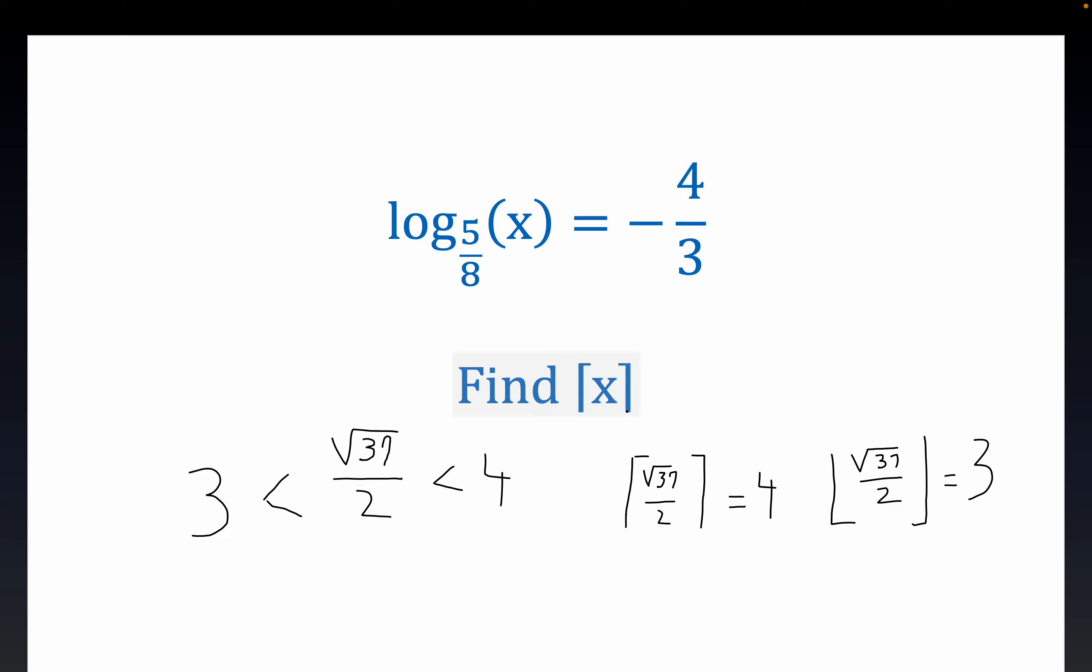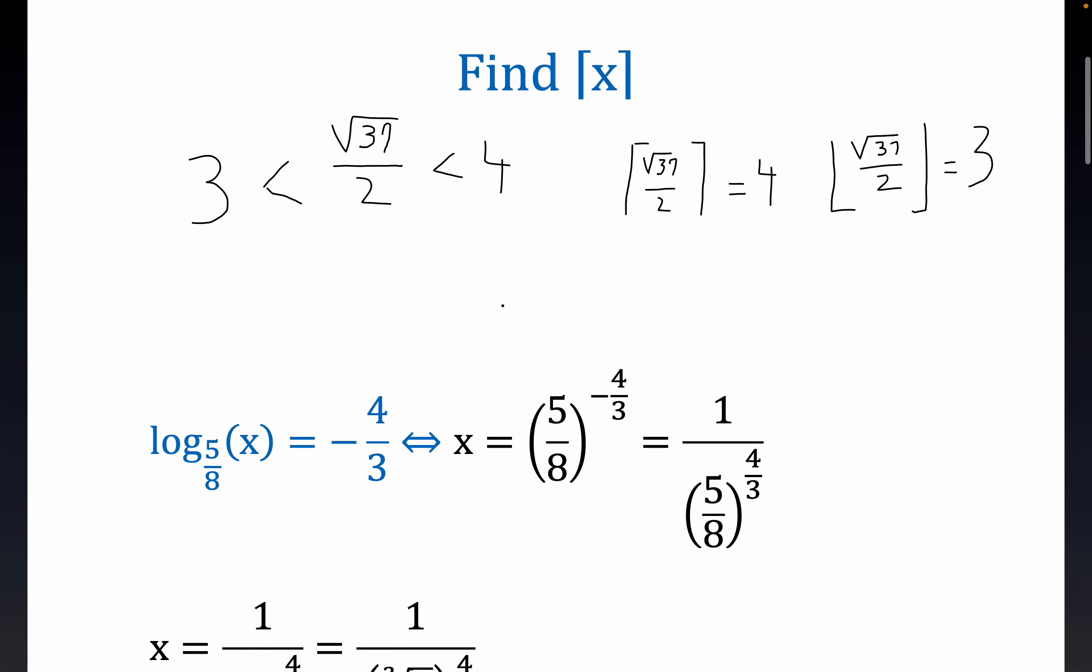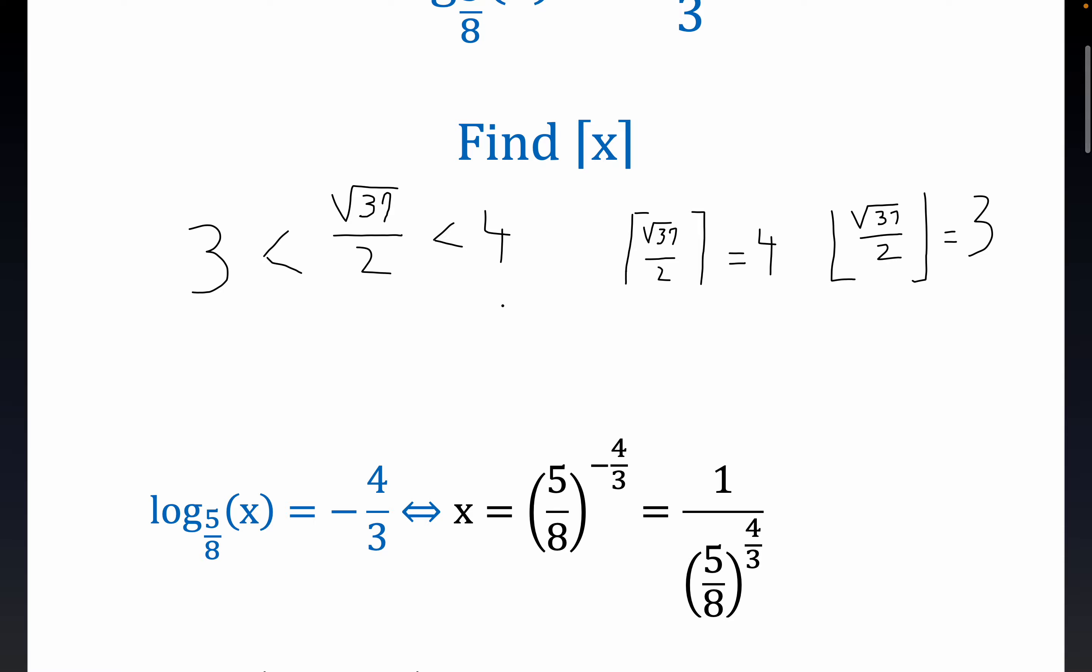So we're looking to find the ceiling of the solution to this logarithmic equation, which has an unusual base less than 1. So let's get busy on that. Now, I'm not going to review logarithms too much, but every logarithmic statement, a logarithm is an exponent, so it always has a corresponding exponential equation, and so this would be that equation. x would be equal to 5 eighths, which is the base of the logarithm statement, raised to the minus 4 thirds power.